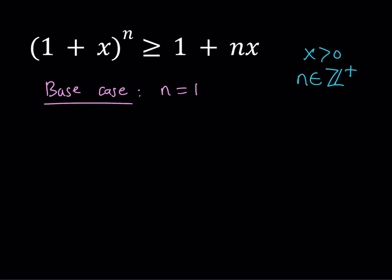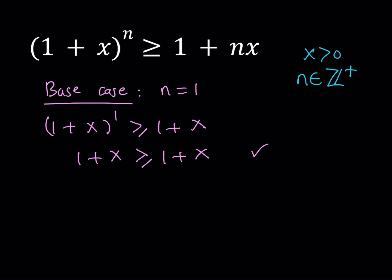Now if you replace n with 1, you get 1 plus x to the power 1 is greater than or equal to 1 plus 1 times x, which is x. And obviously, as you know, any quantity is greater than or equal to itself. So the statement for n equals 1 is true.